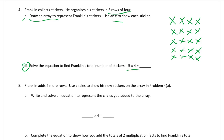Part B: solve the equation to find Franklin's total number of stickers — five times four equals what. You can count them all. If you count the columns you get five, ten, fifteen, twenty. If you skip-count by fours it's a little trickier: four, eight, twelve, sixteen, twenty. Franklin has twenty stickers.